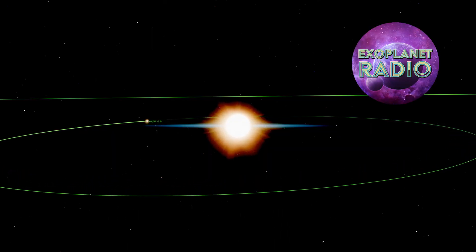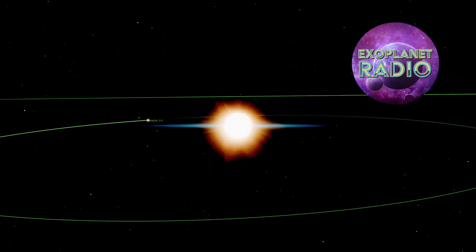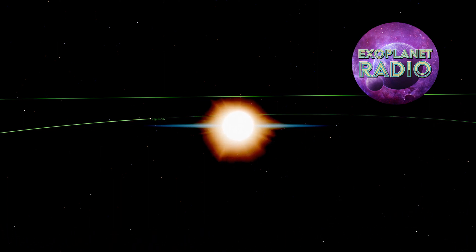From the secondary eclipse, astronomers get information about the thermal structure of the atmosphere of the exoplanet.